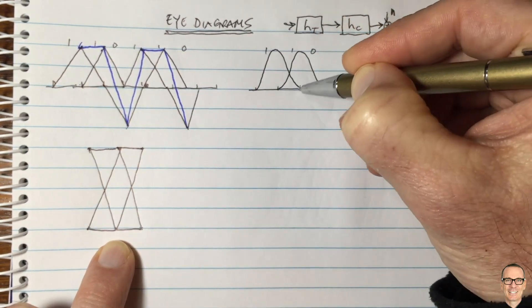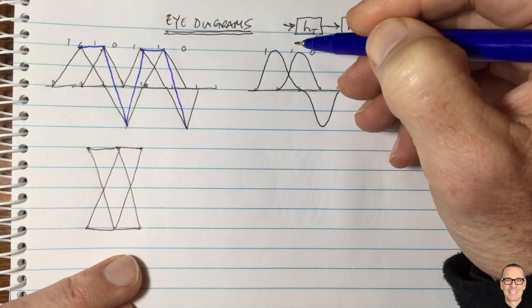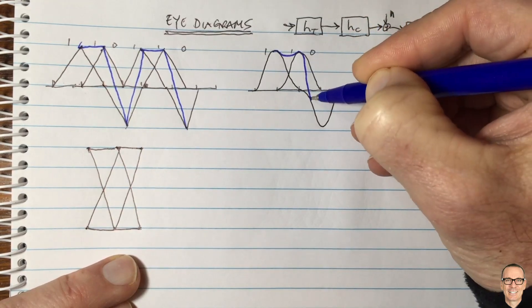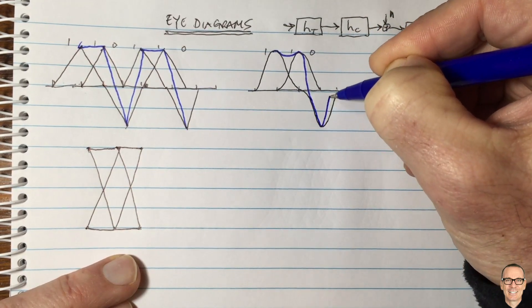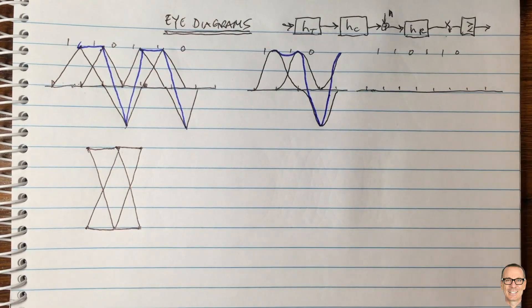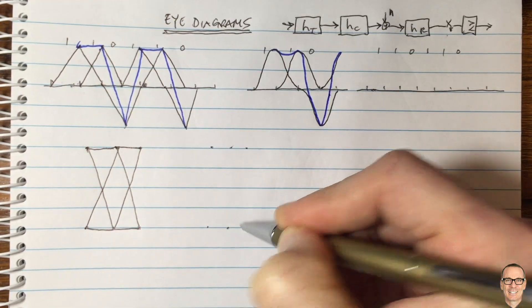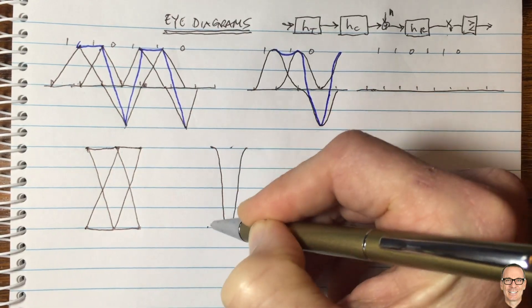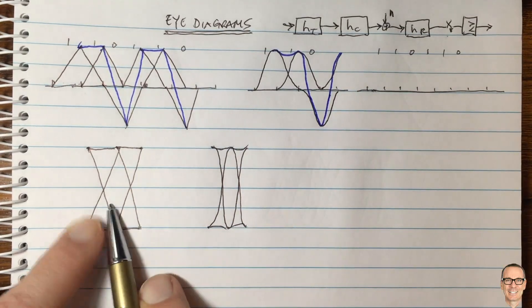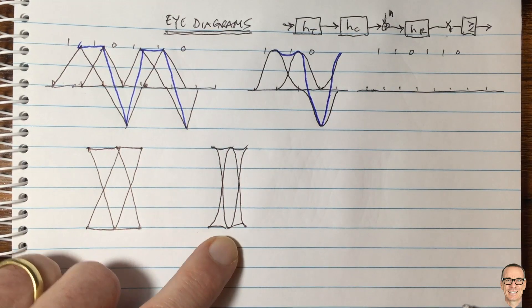We talked about the Gaussian pulse, so let's draw this for the Gaussian pulse. The overall pulse shape goes more smoothly between points — this is what the result of the Gaussian pulse shape looks like for the sequence we had before. In our eye diagram the shapes between these points are more smooth. It's not the sharp triangular shape from before; now it's smoothed out and it starts to look more like an eye.